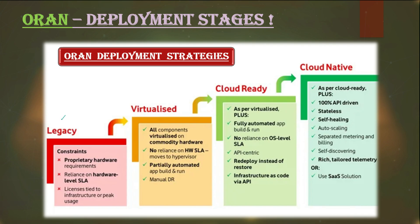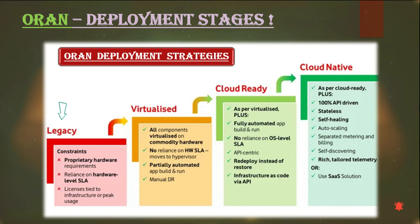Stage 1 of the radio access network is very specific to a single supplier — hardware, software, interfaces, features, and functions — everything. These RAN systems are highly hardware-dependent, and API dependency on hardware is also very high. These RAN systems are not efficient in terms of resource utilization because of very limited features, development, and automation.